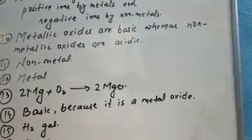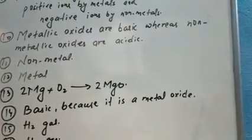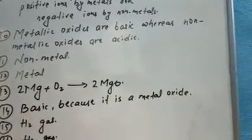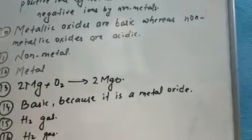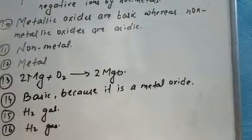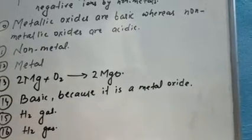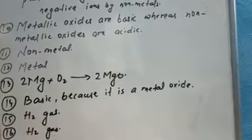Number sixteen: name the gas evolved when a metal reacts with a dilute acid. The answer will remain same, this will also be hydrogen.